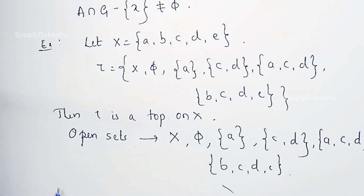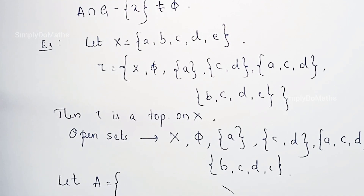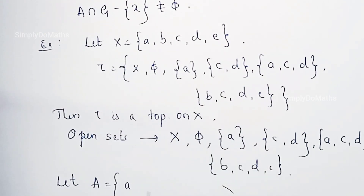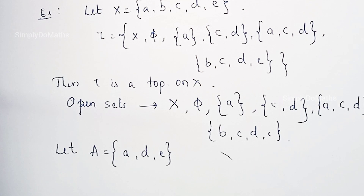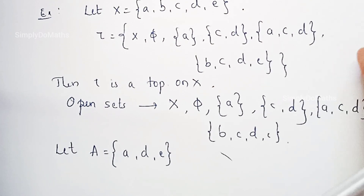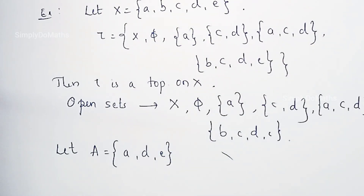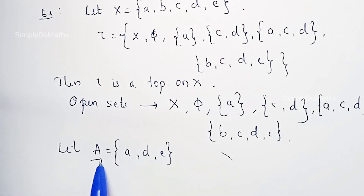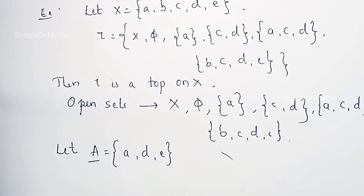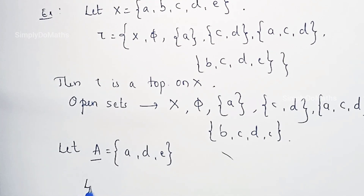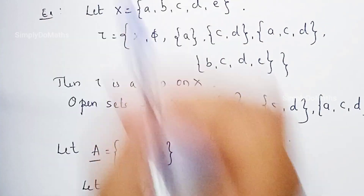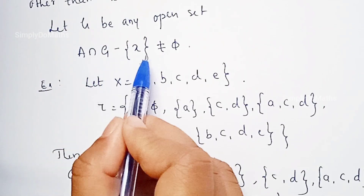Now let us consider one subset of X. Let capital A be the set containing three elements: A, D, E — taken randomly just for clarification of this definition. Now let's find out which point of capital X will become a limit point. Let's check whether the element A itself, as a point of capital X, is a limit point of A or not. If it is a limit point, it should satisfy the condition.